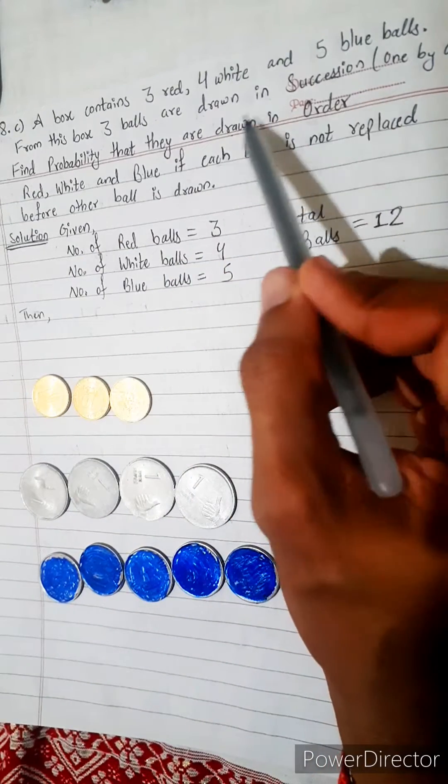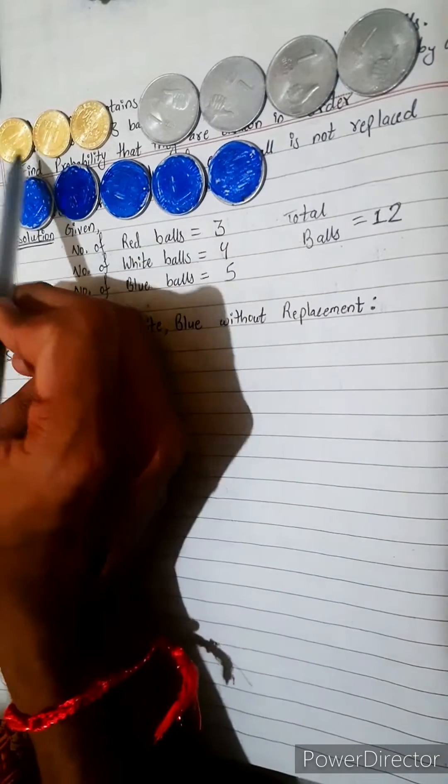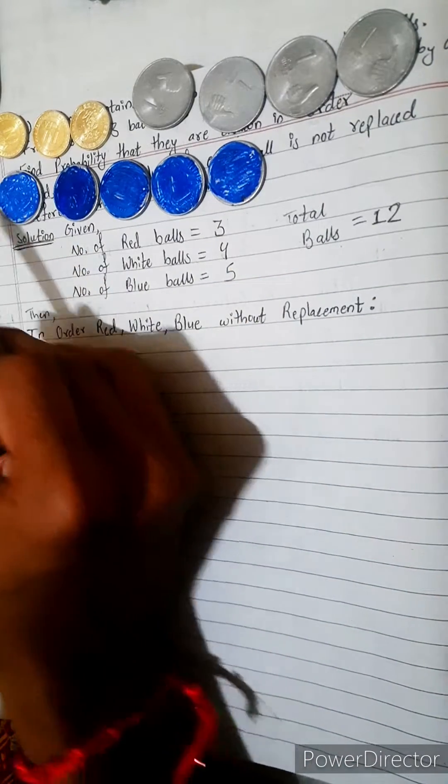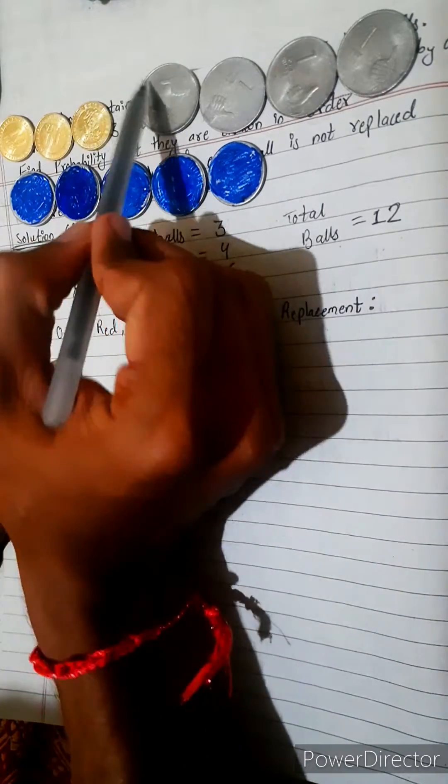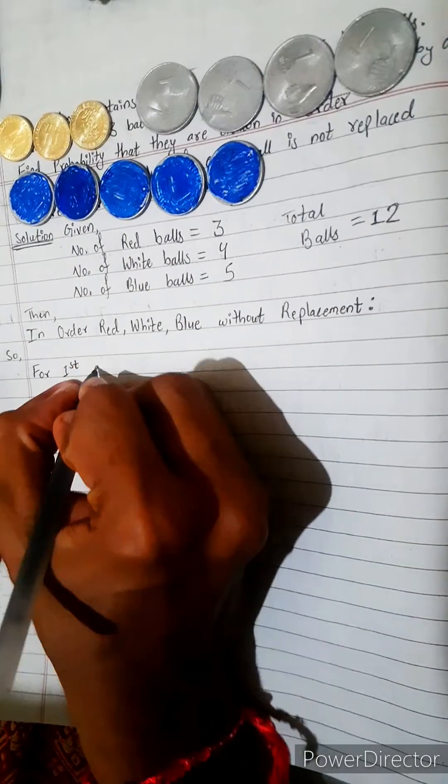Let's find for first draw. We have to find in serial order. For first we need one red, then we need one white, then we need one blue. For first draw or first choose: